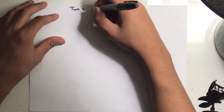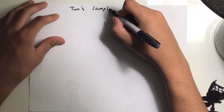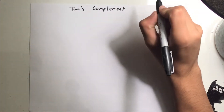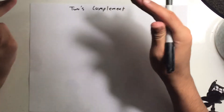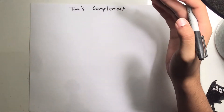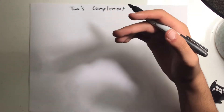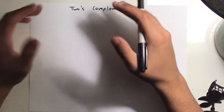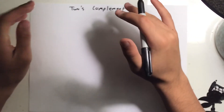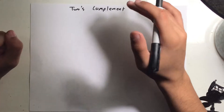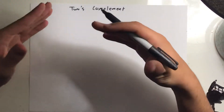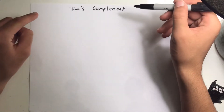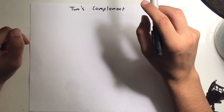Hello, welcome to another UIL computer science video. Today we'll be talking about two's complement. In UIL computer science, they test two's complement on byte because a byte only has 8 bits, so the math is relatively easy and straightforward. Two's complement is what computers use to make numbers negative.